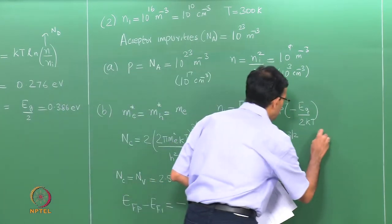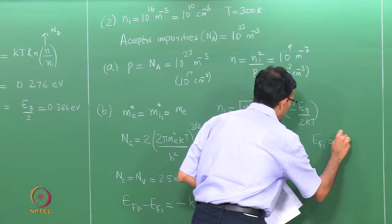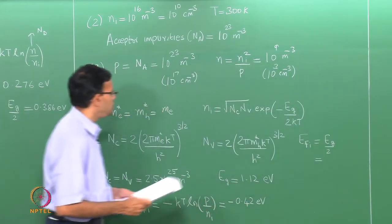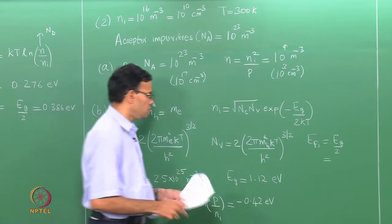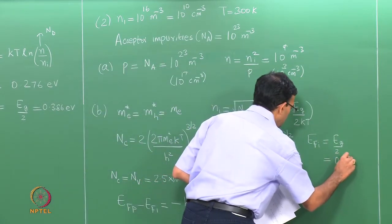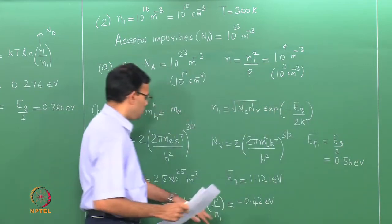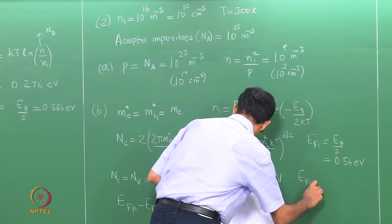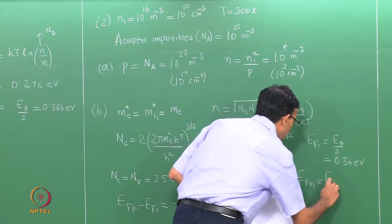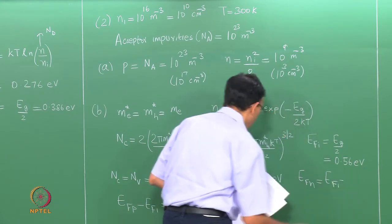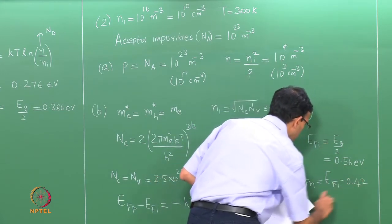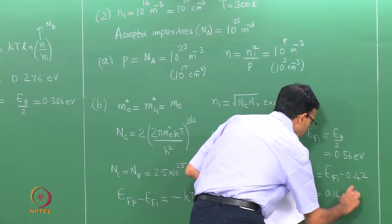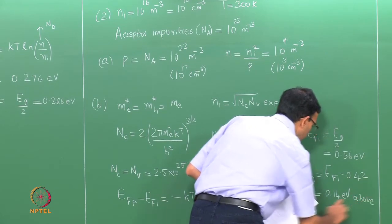We can calculate the value of E_fi = E_g / 2. E_g is 1.12, so E_fi = 0.52 eV. Substituting, E_fp = E_fi − 0.42 = 0.14 eV above the valence band.